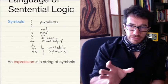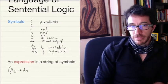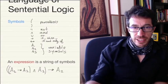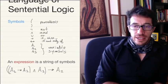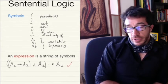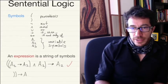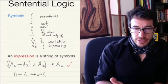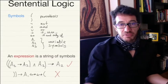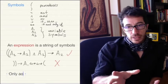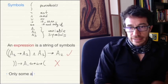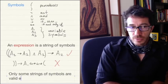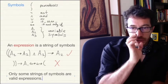Here is an example of a valid expression: A1 implies A2 and A1 implies A2. This is something that makes sense and is a valid expression in our language. But for instance, we can have crazy strings like: parenthesis, parenthesis, implies A1, if-and-only-if, if-and-only-if — which make no sense and are not in the language. Only some expressions are going to be valid, and we need a formal definition to tell which ones are valid expressions and which ones are not.